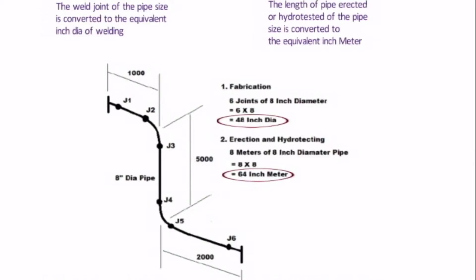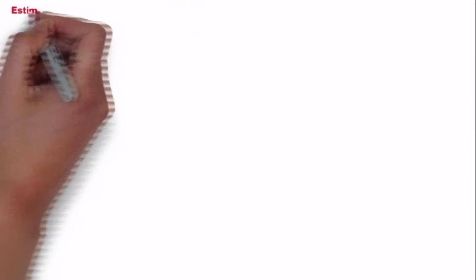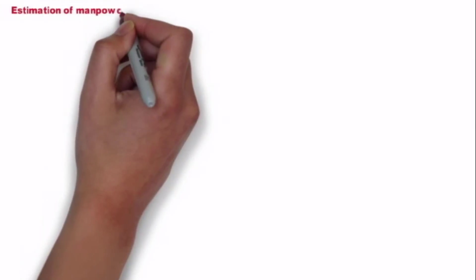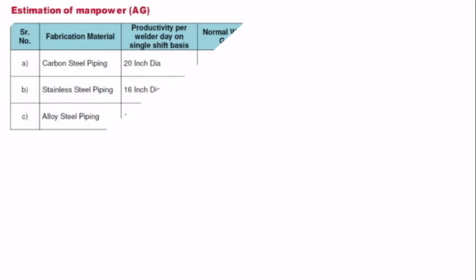Similarly for the erection and hydrotesting we have 8 meter of 8 inch dia pipe, that is 64 inch meter in erection and hydrotesting. To estimate the manpower in above ground pipeline we have this particular chart. For carbon steel pipe, a welder can produce 20 inch dia in a single shift. Similarly in SS pipe he can produce 16 inch dia in single shift, and for alloy steel he can produce 14 inch dia in a single shift. But this is only a guideline, it can vary.